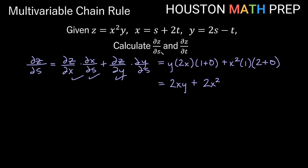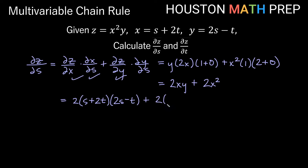Since we want the answer in terms of s and t, the variables on the final row of our diagram, we substitute back. We have 2 times x, which is (s + 2t), times y, which is (2s − t), plus 2 times x squared, which is (s + 2t)². So the expression becomes 2(s + 2t)(2s − t) plus 2(s + 2t)².